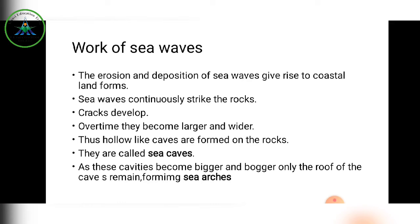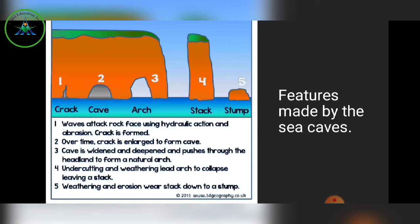These hollow cave-like structures are called sea caves. As the cavities become bigger and bigger — like a tooth cavity that grows if unfilled — only the roof of the cave remains, forming sea arcs. Looking at the image: first a crack develops, then it becomes a cave, then it takes the shape of an arc, then a stack, then a stump.